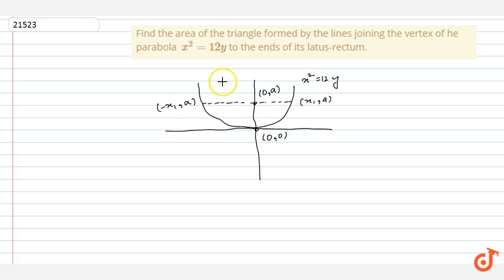If we join the ends of the latus rectum with the vertex, a triangle is formed whose area we have to find. Note that this angle is a right angle.